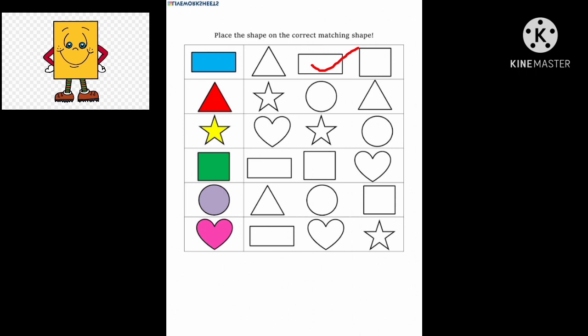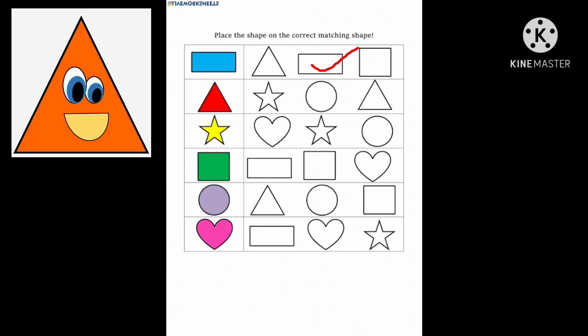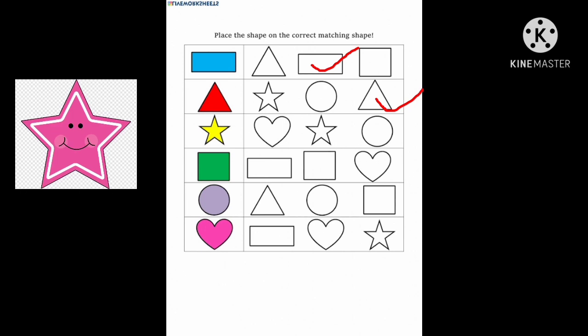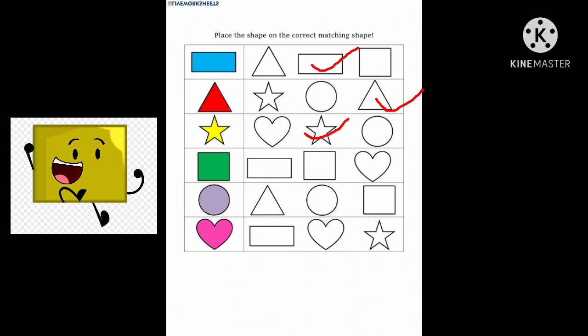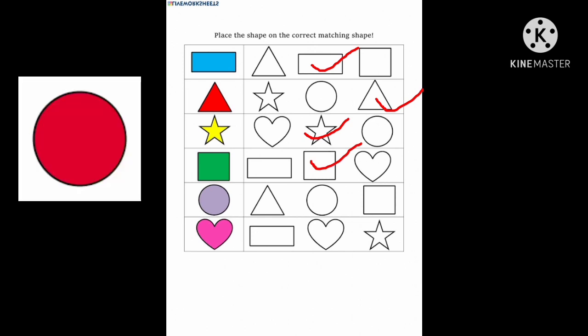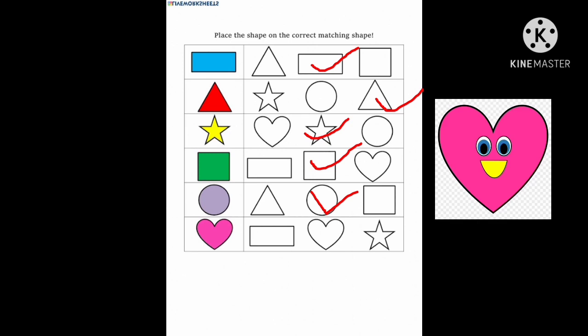Let's do some worksheet. Rectangle. Triangle. Star. Find out next. Square. Then Circle. Heart.